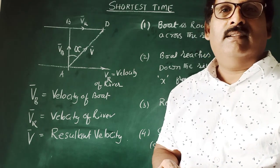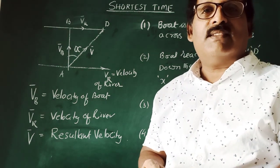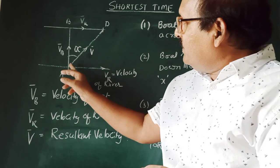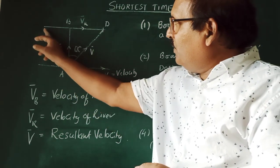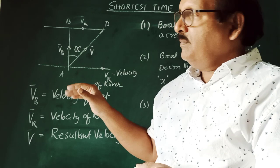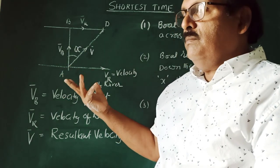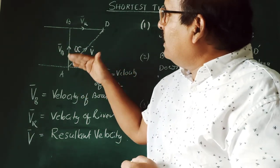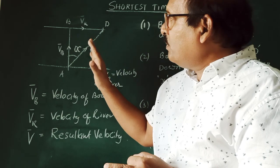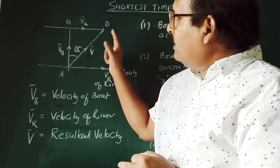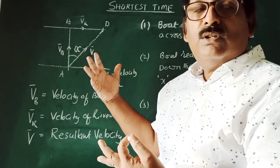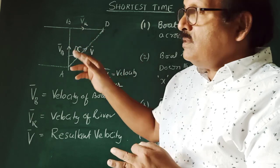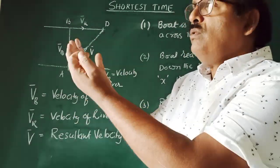This is an application of resultant velocity in vectors. The river is flowing with velocity vr, which is fixed, and you can move the boat with velocity vb. Our intention is to reach the other side in the shortest time. Shortest time means highest velocity — so the velocity of the boat and velocity of the river must be added.